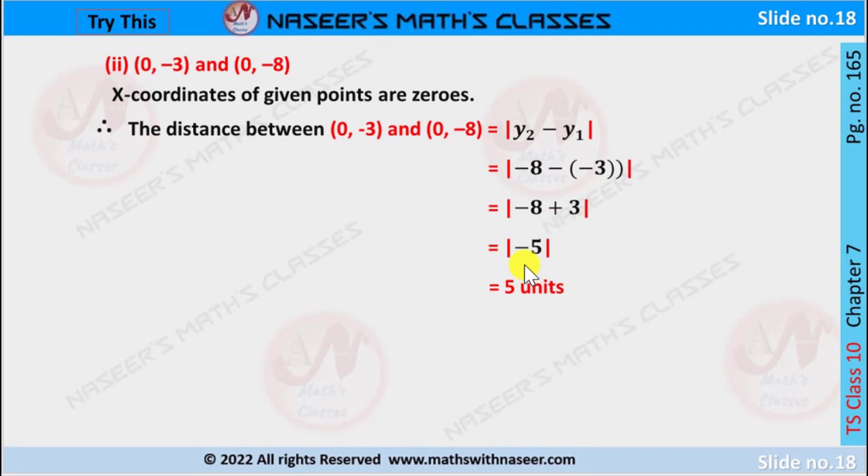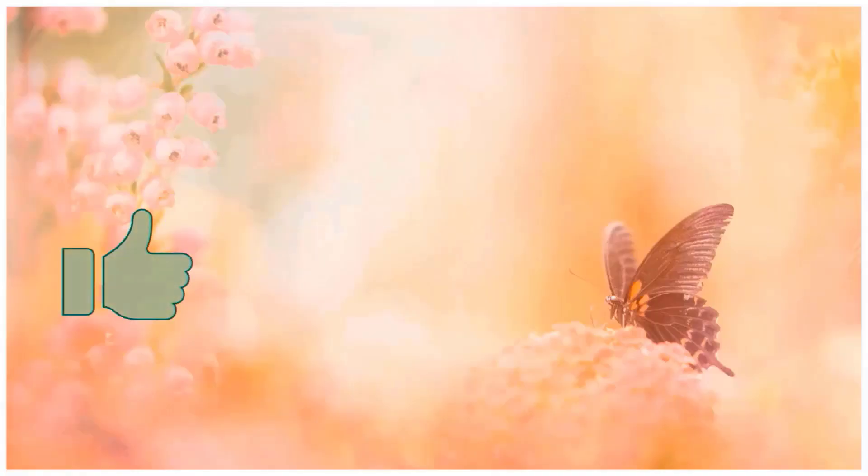By simplifying this, we get -5. |-5| becomes +5. Therefore, the distance between the given two points is 5 units.